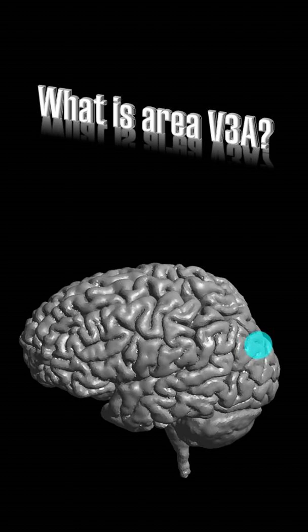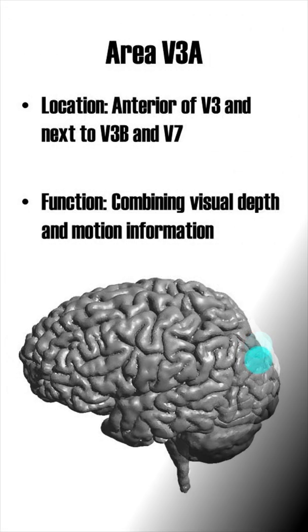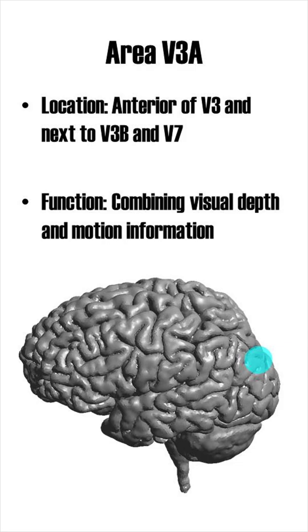What is area V3a? Visual area 3a is located anterior of V3, neighboring visual area 3b and V7. Its function is to combine visual depth and motion.